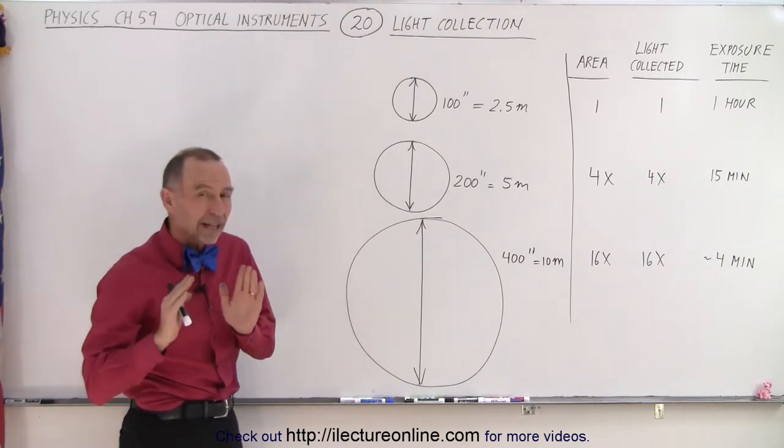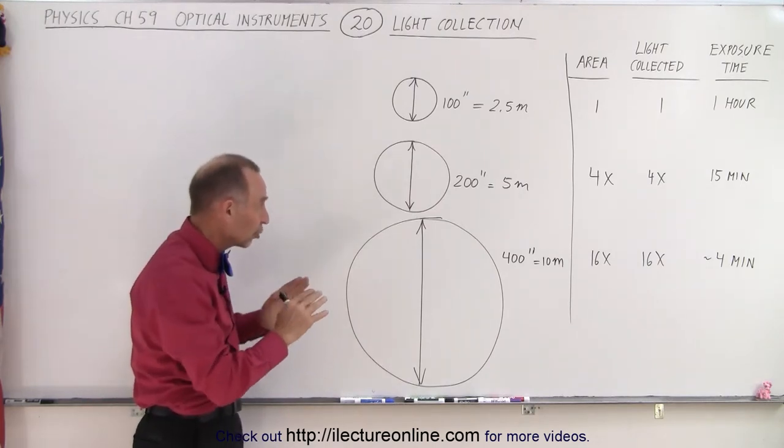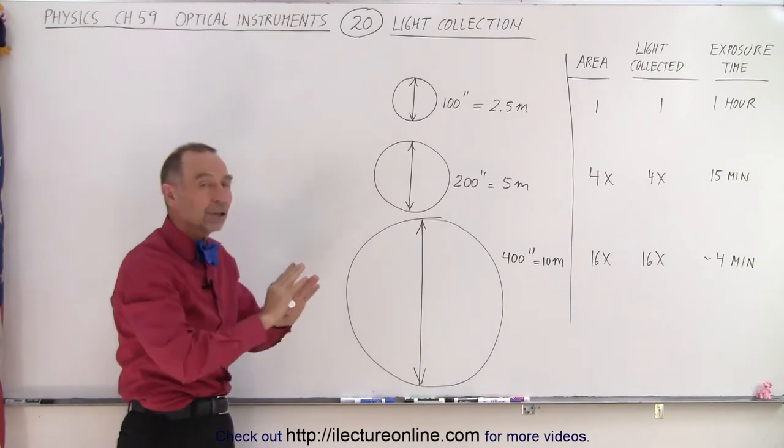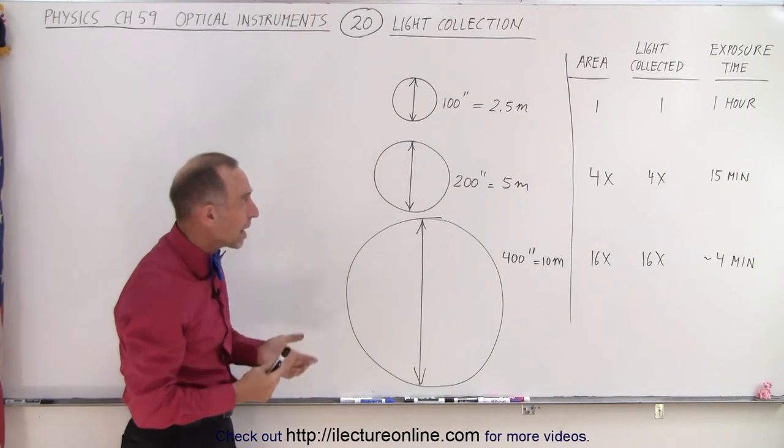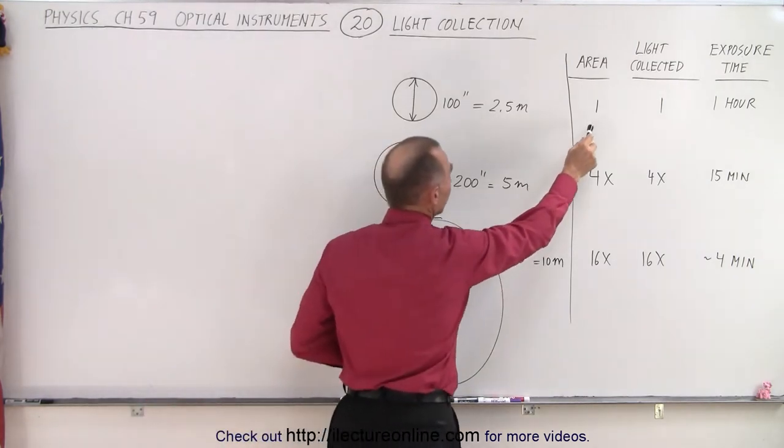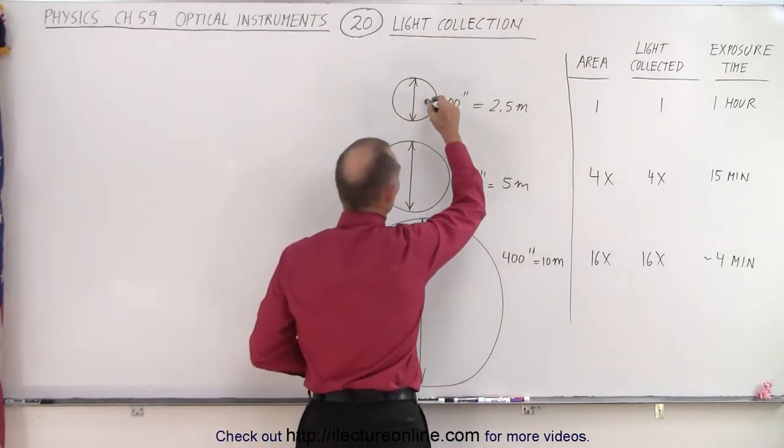Notice that the amount of light you can collect with a telescope depends on the surface area of the objective lens or the objective mirror. So if you want to compare, if you want to set the amount of area you have on a telescope like this...